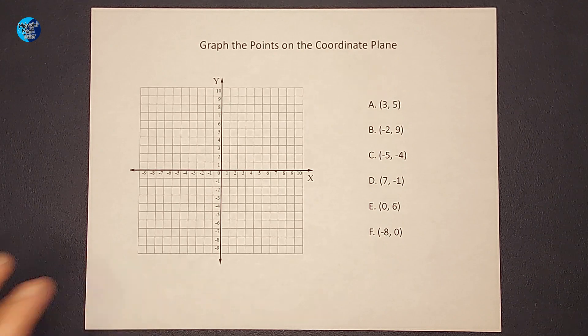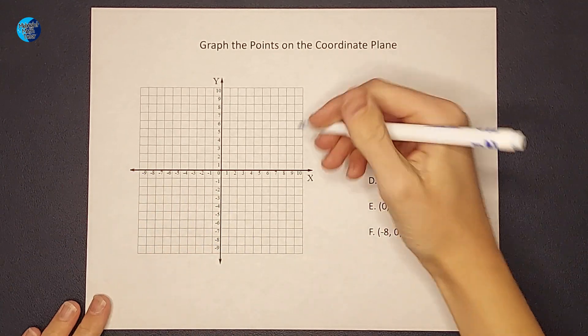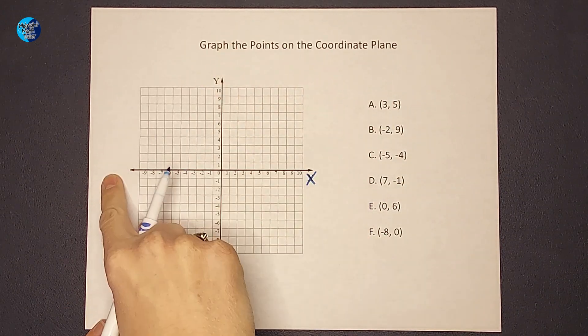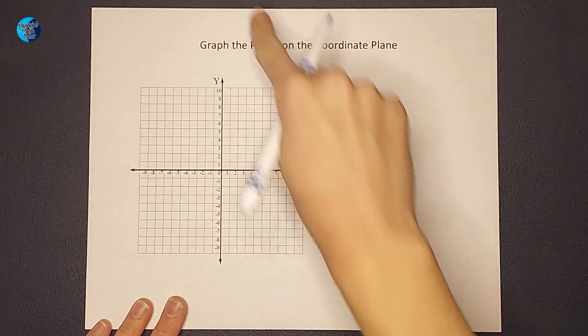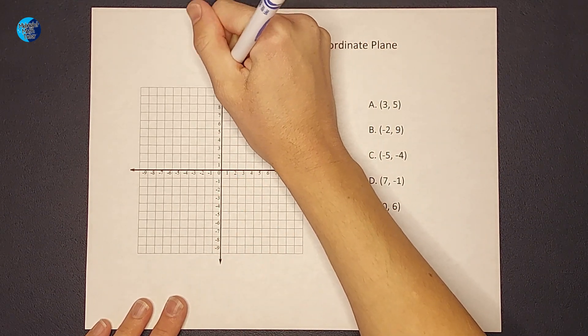Now when we graph these, the biggest things we need to remember is that this is our x-axis. A lot of times it will be labeled like this. So the horizontal one is our x-axis. The vertical one, the one going up and down, is our y-axis.